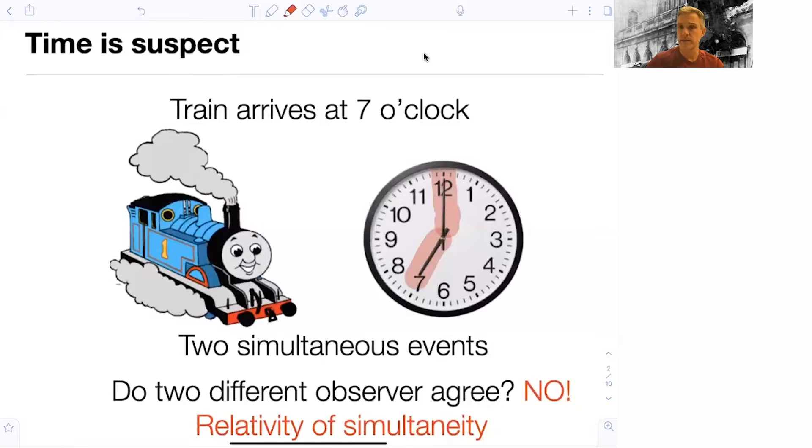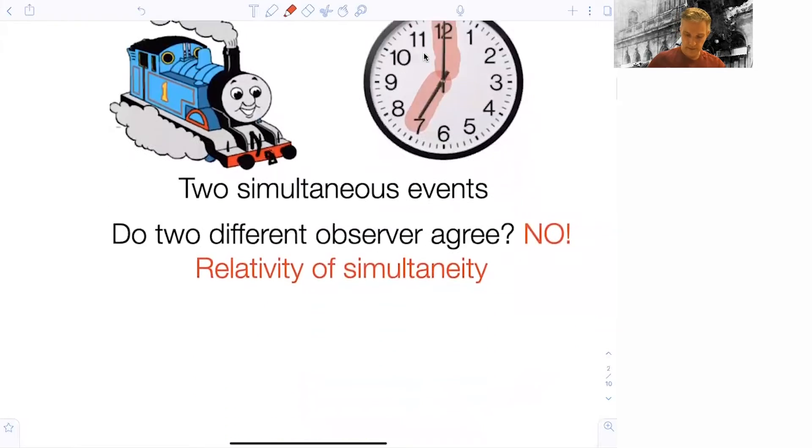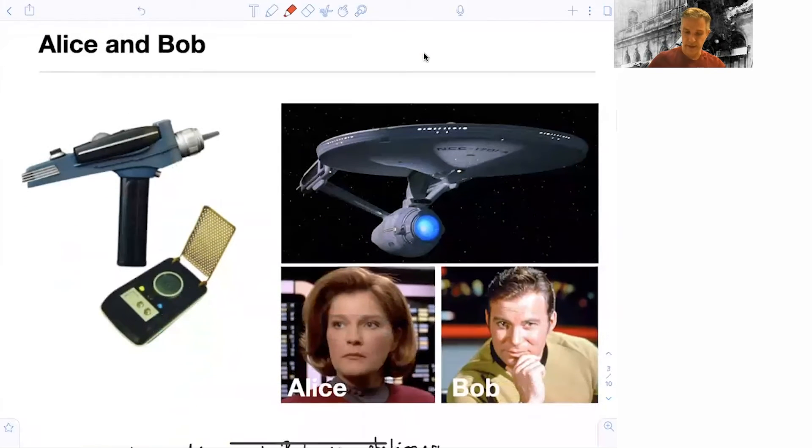The question now is whether or not two observers, one stationary and one moving, agree with this observation. And I'll take it away. The answer is no. There is a relativity of simultaneity, meaning that two observers can very much agree on the description of two events, but not necessarily that those two events happen simultaneously.